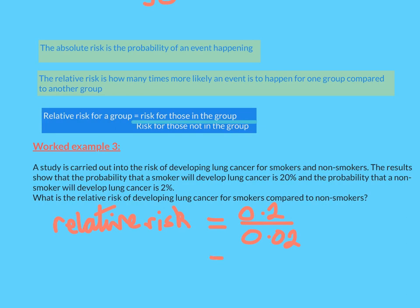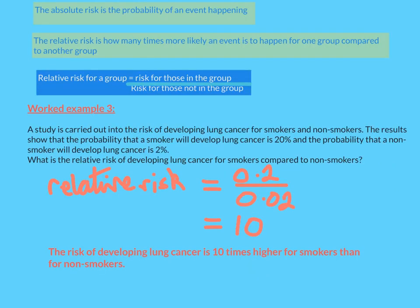That means that the relative risk is 10. So the risk of developing lung cancer if you smoke is 10 times higher than if you don't smoke. So let's write a sentence just to say that to finish off. Make sure you've got all those notes down and that you understand what you need to do and then have a go at the practice questions.